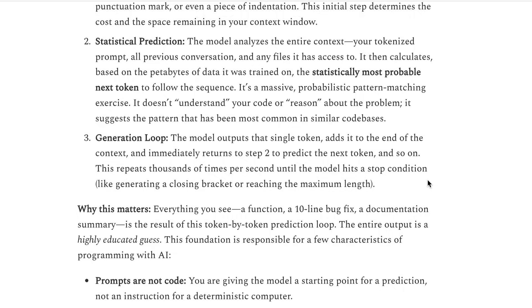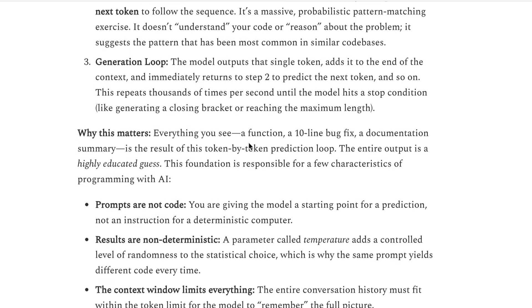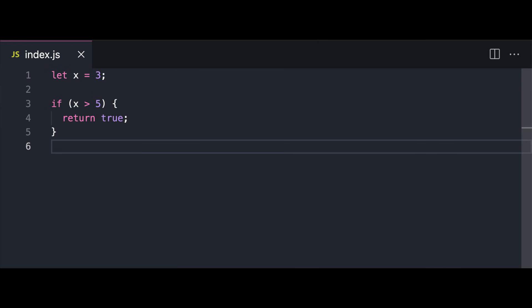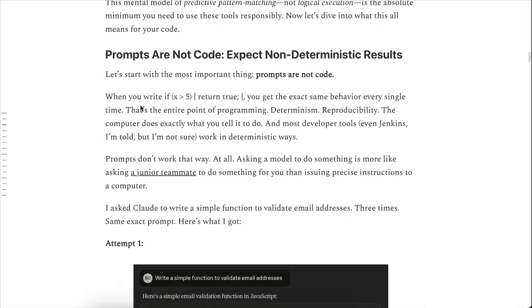The result could be a full function, a bug fix, or ten paragraphs of explanation — it's all a highly educated guess created from that token prediction loop running over and over. Once you realize that AI works through predictive pattern matching rather than logical execution, a lot of things suddenly make sense. The prompt you provide isn't an exact instruction. In programming, you are instructing a computer what to do, so the results are deterministic. If you write 'return true when x is less than 5,' you can expect to get true as long as x is less than 5. That's the entire point of programming — it's deterministic and reproducible.